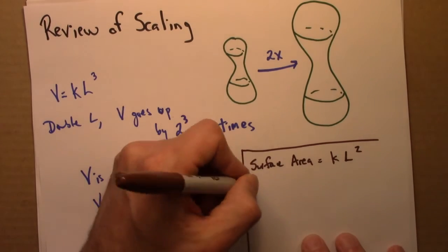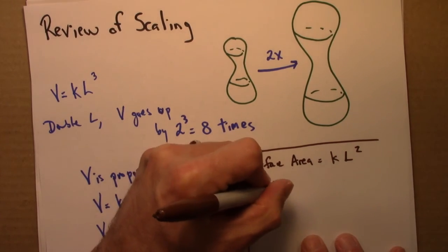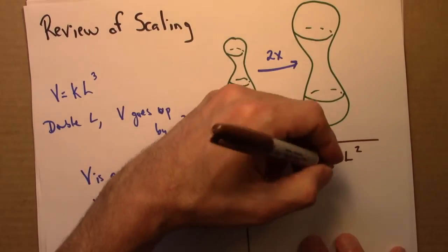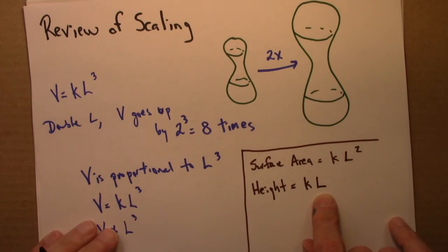And then if I maybe wanted to look at, say, the height to this, that's going to be proportional just to L. Height is one-dimensional, and L is the same as L to the 1.